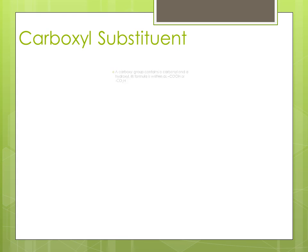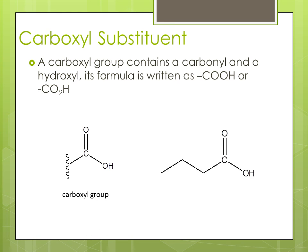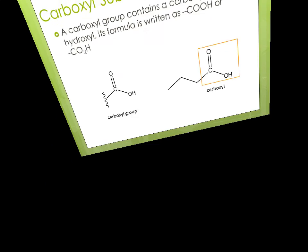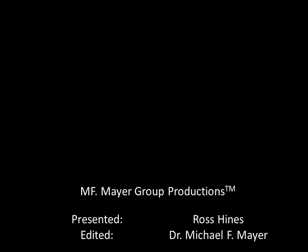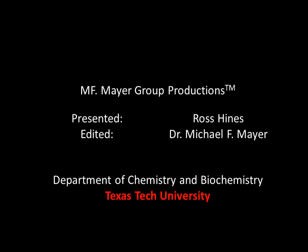Carboxyl substituents. A carboxyl group contains a carbonyl and a hydroxyl group, and its formula is written as a carbon with two oxygens and a hydrogen. Here is a carboxyl group being used. And this concludes our short introduction to R-groups and substituents in organic chemistry.